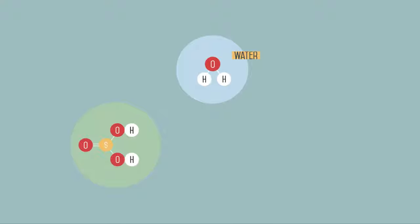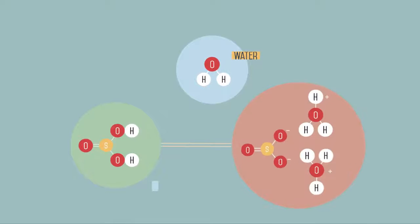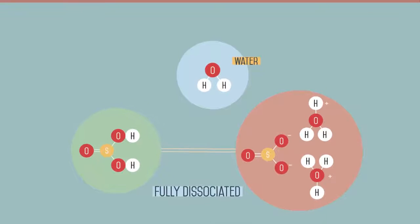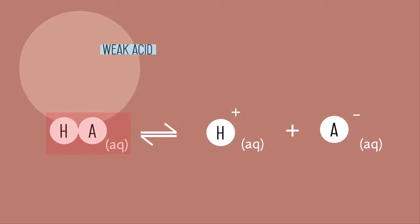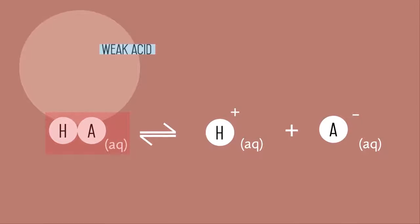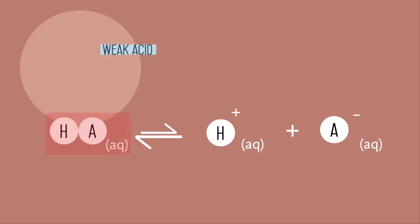Strong acids like the three mentioned above dissociate 100% into their ions like this. Most acids are weak and remain largely as molecules in solution, i.e. they do not ionise very much. Note the equilibrium arrow here.